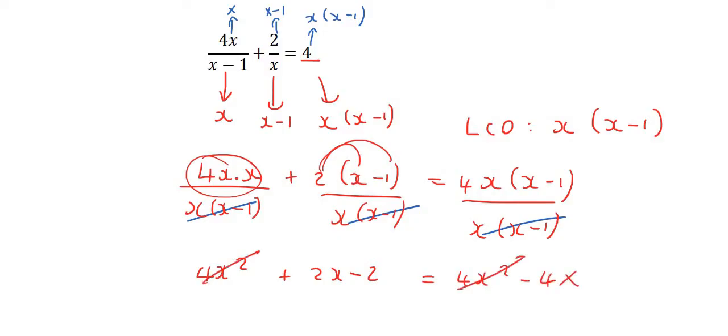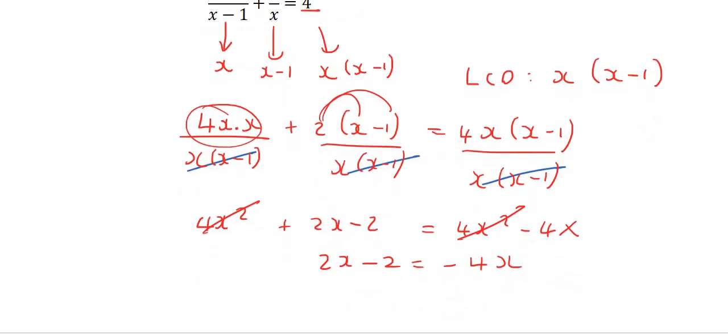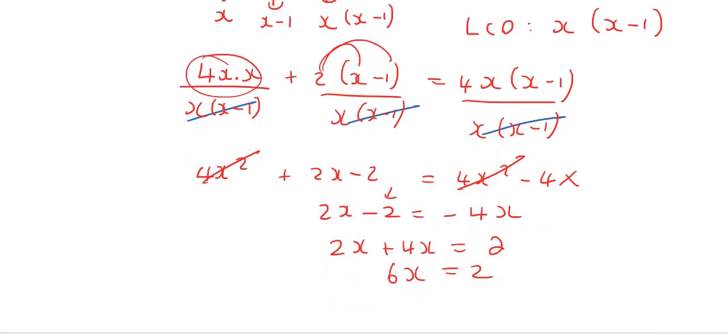So what we now have is 2x minus 2 equals negative 4x. I'm going to bring the negative 4x over, so that's going to become 2x plus 4x, and I'm going to take this negative 2 over to become positive 2. Now we have 6x equals 2. Divide by 6, and if it simplifies, 2 a third.